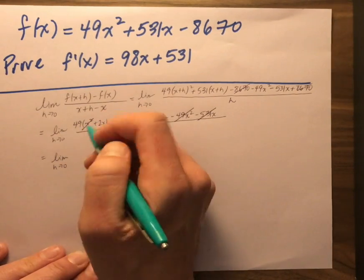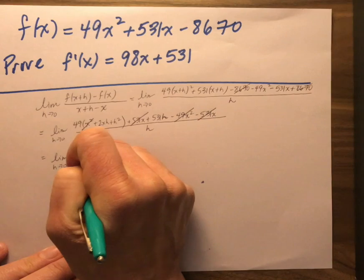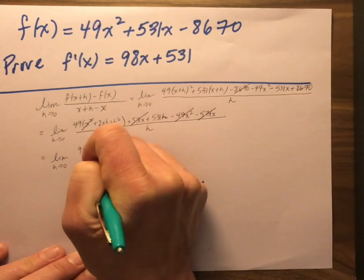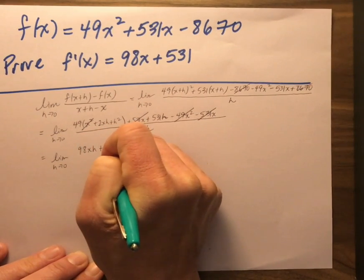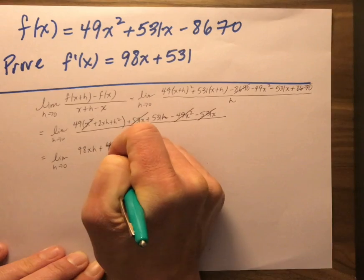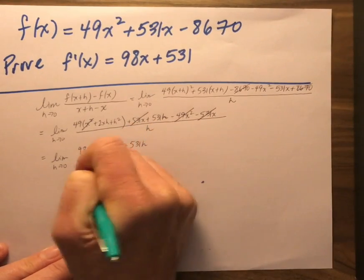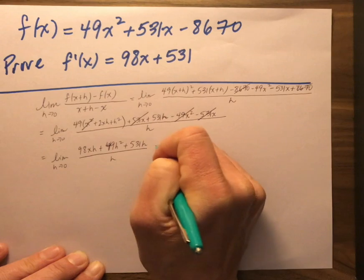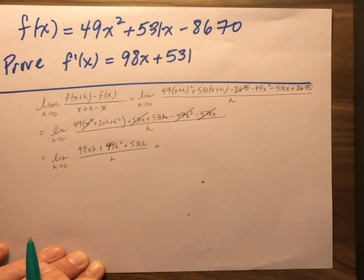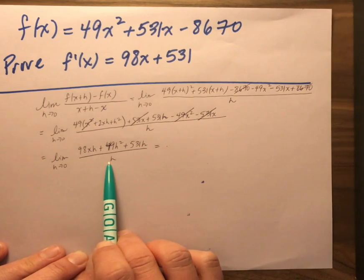So distribute what's left. The 49 goes in there and I'm left with 98xh plus, whoops, 49h squared plus 531h all over h. Now I'm at the point where I notice if I plug h equals 0 now, if I take that limit, I get 0 plus 0 plus 0 all over 0. So I know I haven't done enough. Still working.